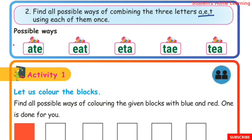The possible combinations of letters A, E, T are: AET, ATE, EAT, ETA, TAE, TEA — listing all permutations where each letter is used exactly once.